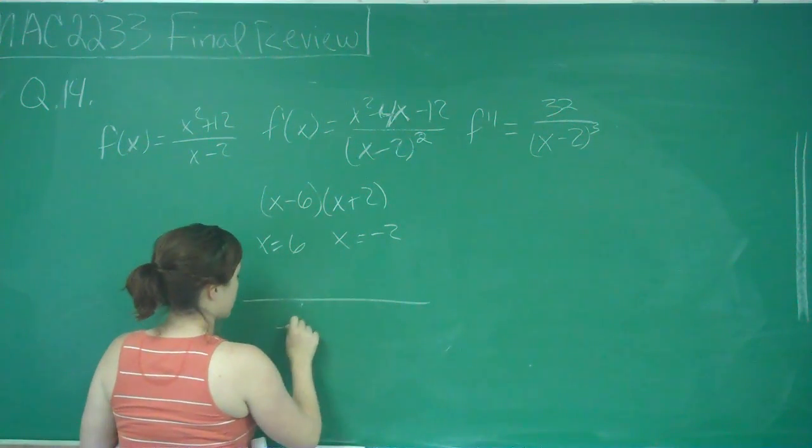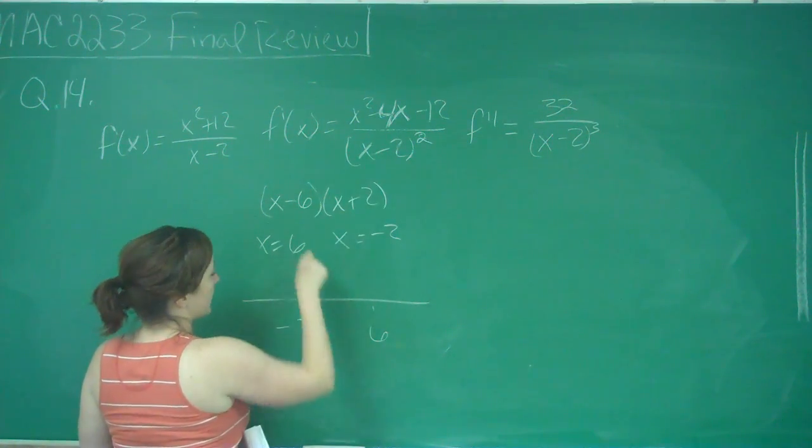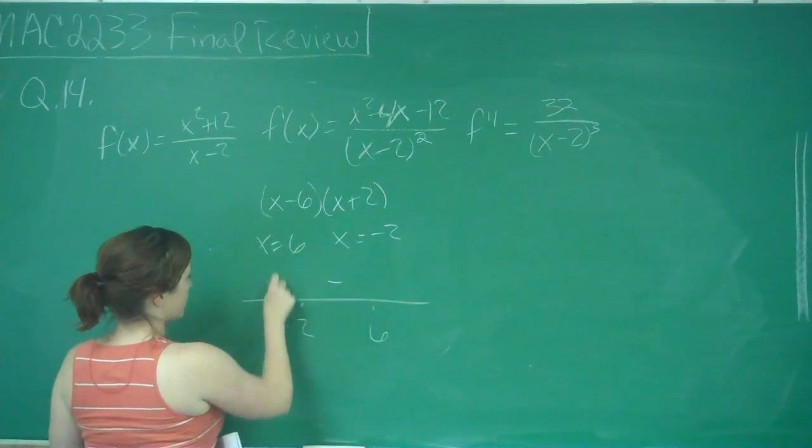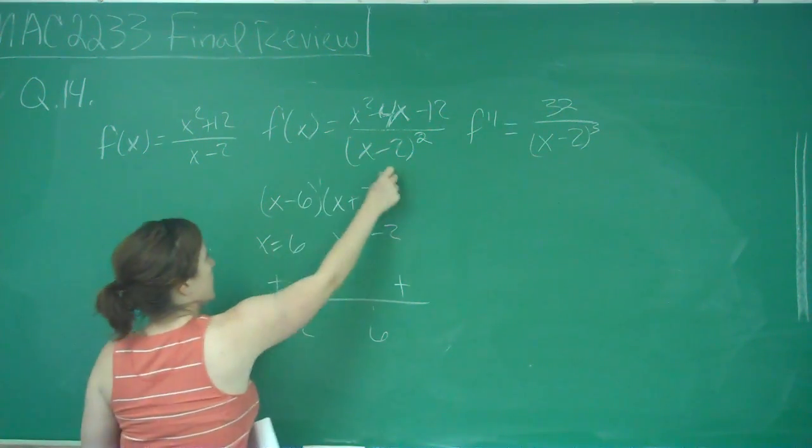Put those on my number line. If I plug in 0, I know that I'll get a negative, and then I know that they're going to alternate because those powers here are odd.